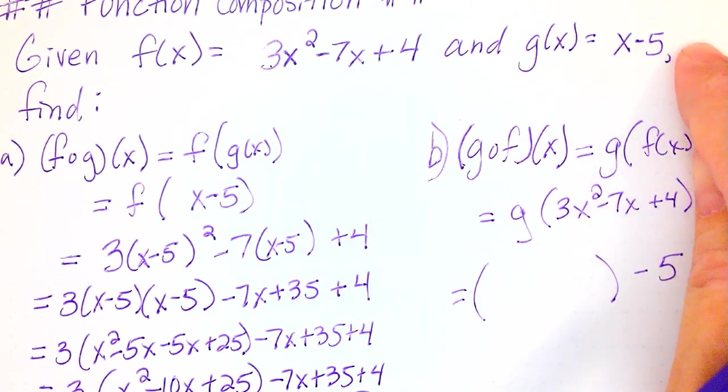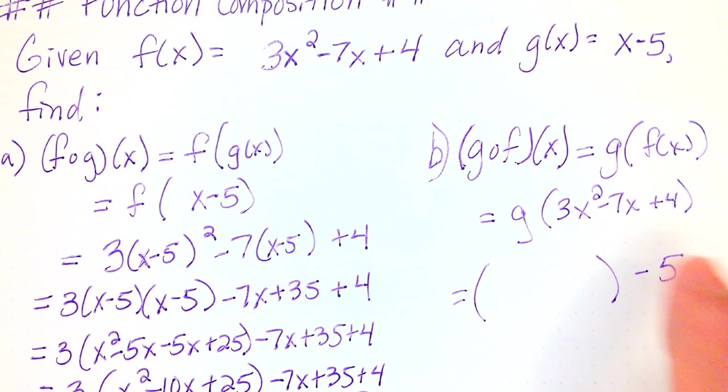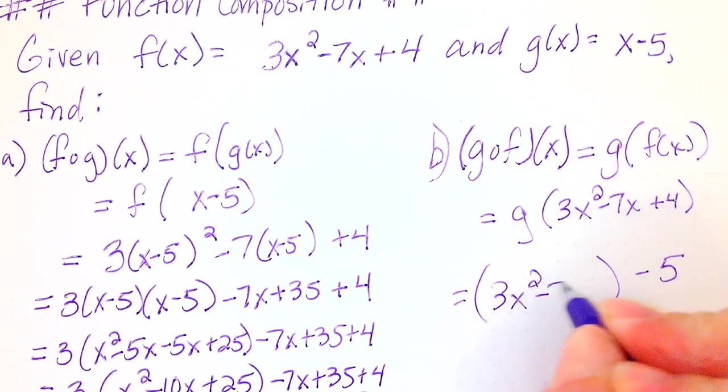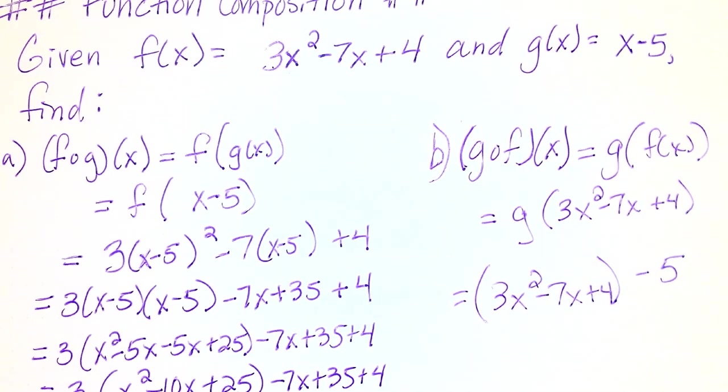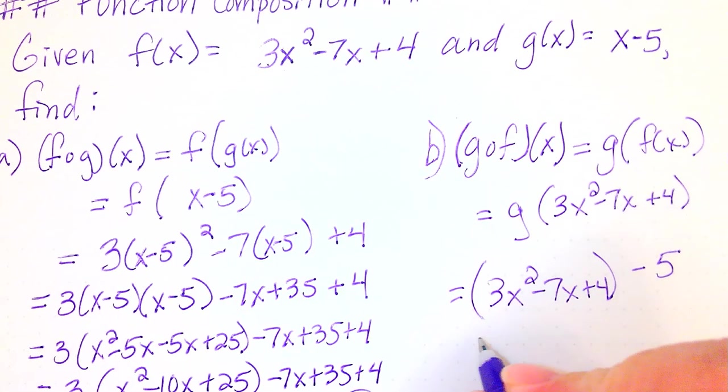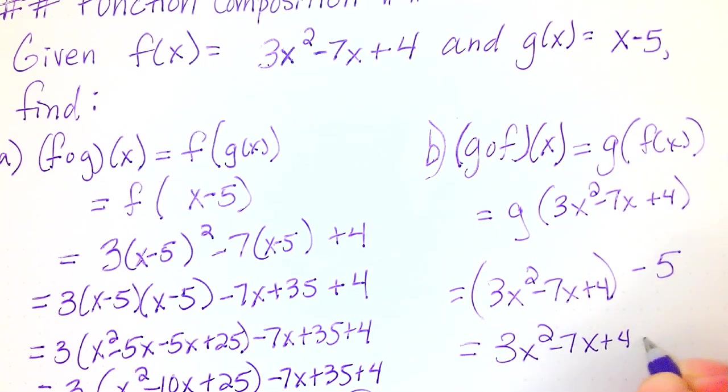So g is parentheses minus 5, x minus 5, parentheses minus 5. What goes in the parentheses? This 3x squared minus 7x plus 4. So we really don't need the parentheses. Sometimes you need it. Sometimes you don't. But in this case, we don't. So we have 3x squared minus 7x plus 4 minus 5.